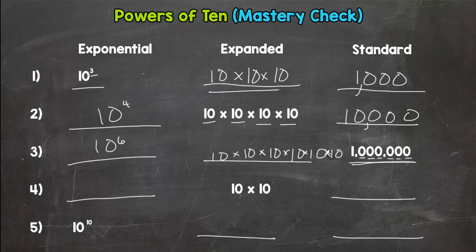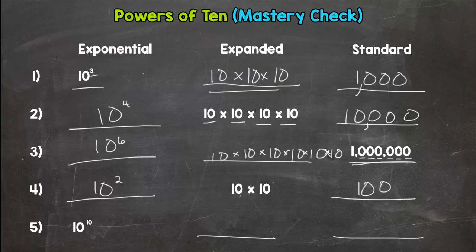For number four we have ten times ten, we should have ten squared, ten to the second power, or ten to the power of two. So three ways to say that, and that is one hundred. Two zeros, two tens, exponent of two, they all match.